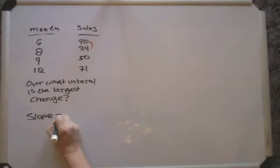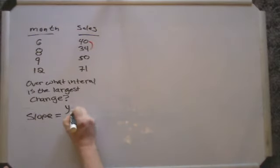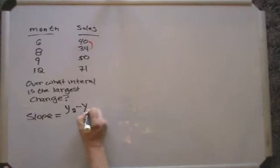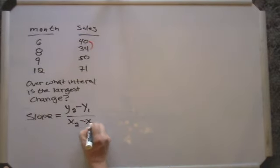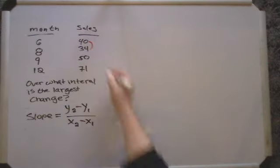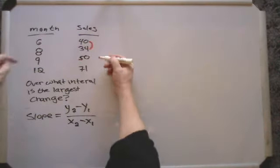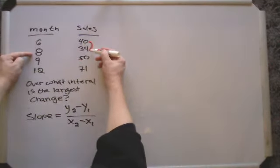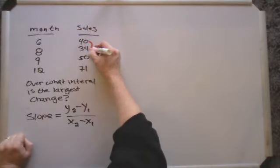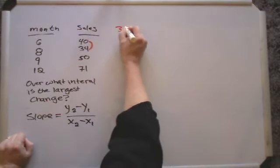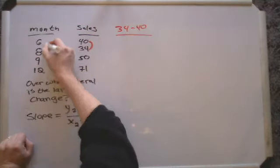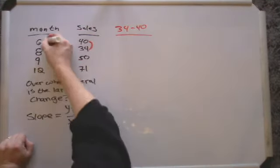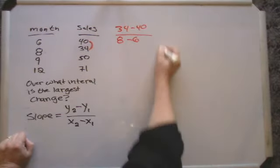Remember that slope is the difference in y divided by the difference in x, so slope equals (y₂ - y₁) / (x₂ - x₁). Let's take a look at this first interval up here, this interval between June and how we did in August. So we take the second y minus the first, so 34 minus 40, and the second x minus the first x, 8 minus 6.